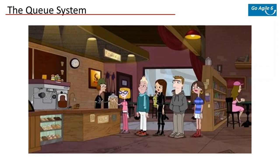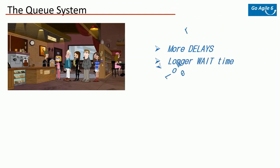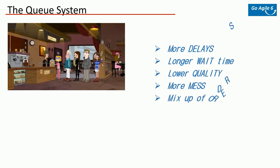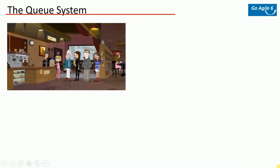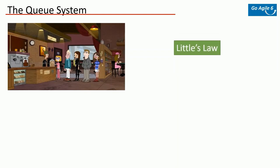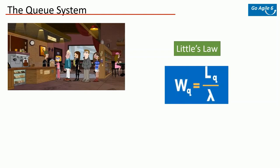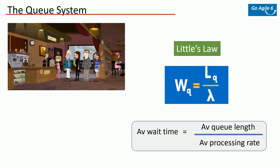Now let's study the queue system. Imagine there is a coffee shop and customers are walking in to order coffee. When more and more people come in, the queue becomes longer, which directly translates to delays, increased wait time, quality of coffee could be compromised, wrong orders can be processed, and the person making it could be demotivated. So in IT projects you try to reduce wait times. A professor by name John Little developed a formula to measure average wait time: take the average queue length and divide it by average processing time. Generally, just keep in mind longer queues lead to longer wait times.